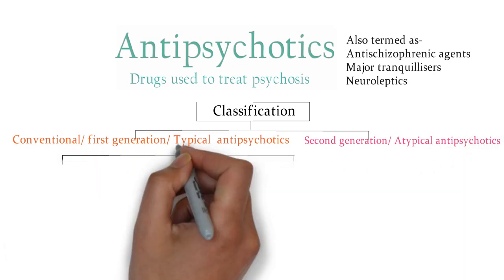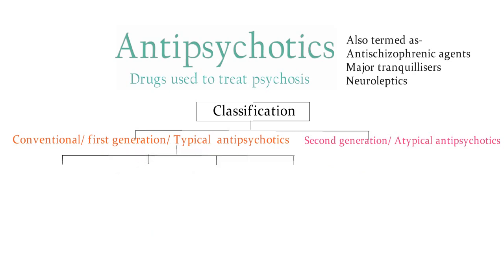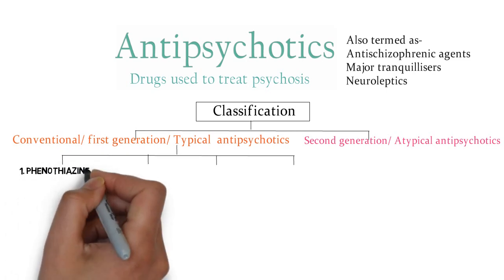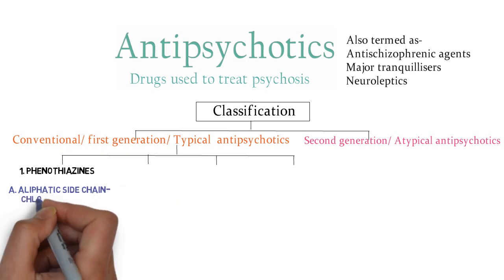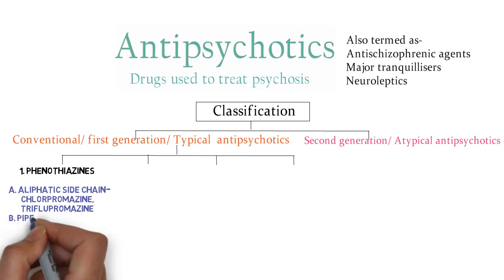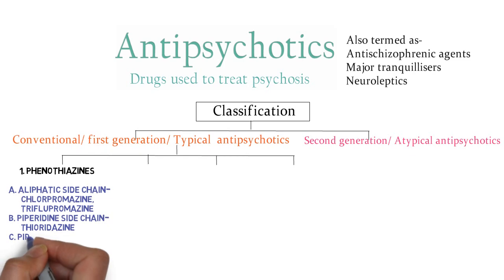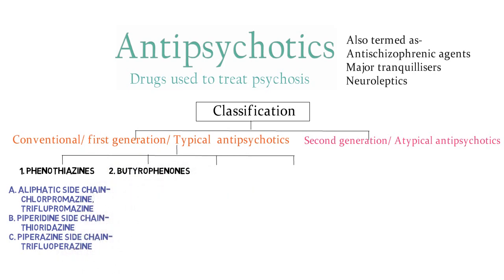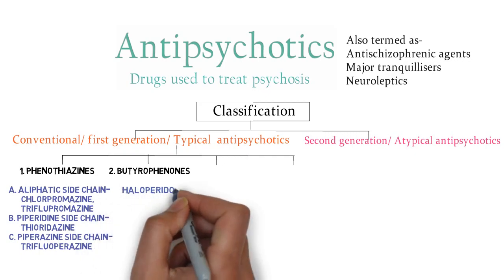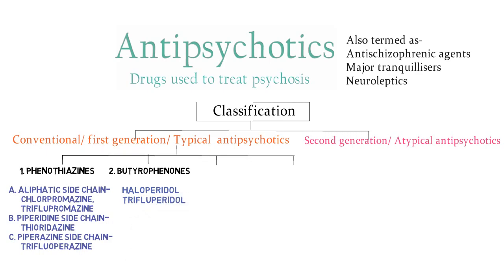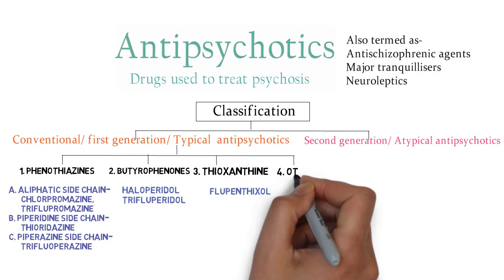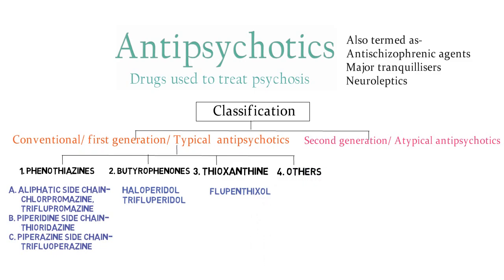The typical antipsychotics are further divided into four categories depending upon the parent moiety. The first moiety is phenothiazine, whose side chain is further classified into three categories: aliphatic side chain (example: chlorpromazine), piperidine side chain (example: thioridazine), and piperazine side chain (example: trifluoperazine). The next parent moiety is butyrophenones, with examples haloperidol and trifluperidol. The third parent structure is thioxanthene, with example flupenthixol. The last category, others, includes drugs with different heterocyclic rings — examples are pimozide and loxapine.